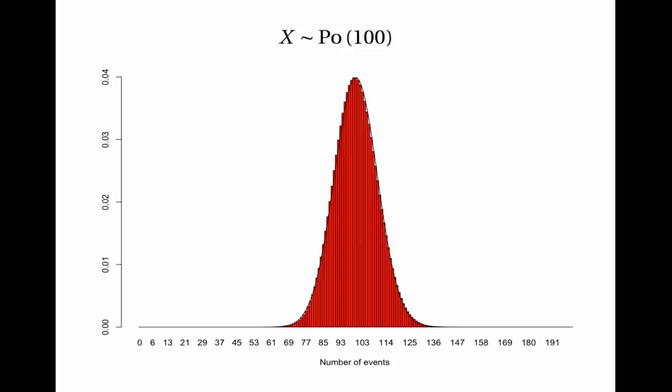The approximation works better the larger the value of lambda, and you should only make it at all if lambda is greater than 10.